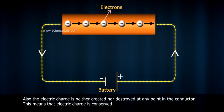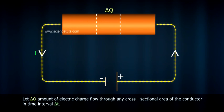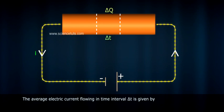This means that electric charge is conserved. Let ΔQ amount of electric charge flow through any cross-sectional area of the conductor in time interval Δt. The average electric current flowing in time interval Δt is given by average I = ΔQ/Δt.